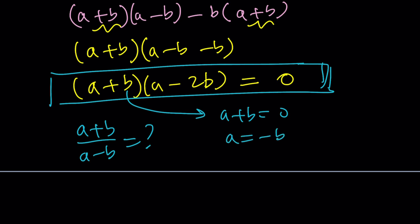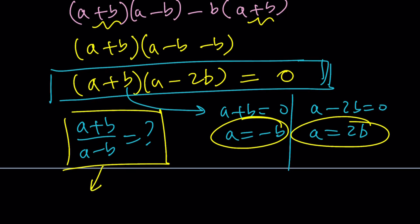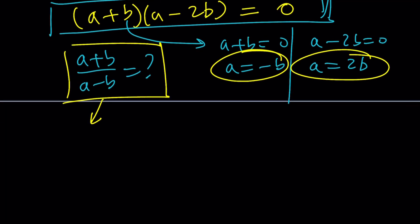Now we can use these here because this is the ratio we're trying to evaluate. One value would be if you replace a with negative b: negative b plus b divided by negative b minus b, which is 0 over negative 2b. That's 0. Obviously, in this case, you don't want b to be 0.